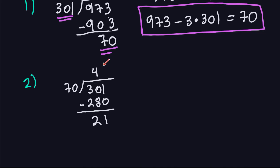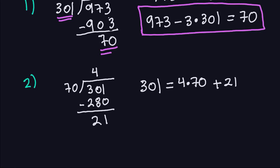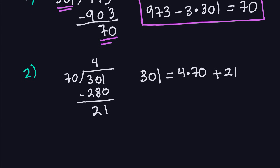I need to write down the equation corresponding to this division: 301 is equal to 4 times 70 plus 21. Now I solve for the remainder. So that gives me: 301 minus 4 times 70 is equal to 21. I'm going to put that in a box because I'll use it later.